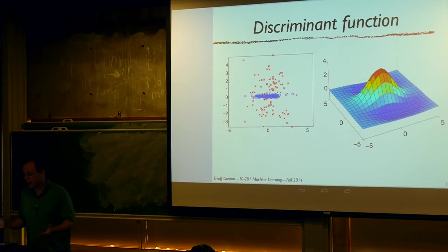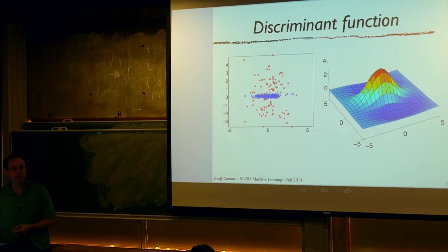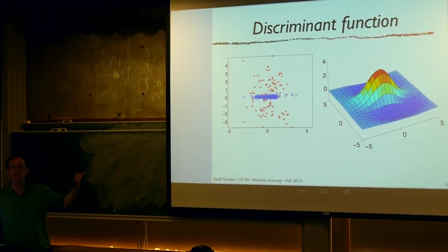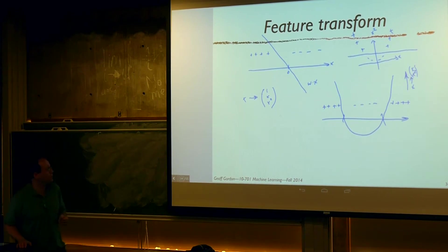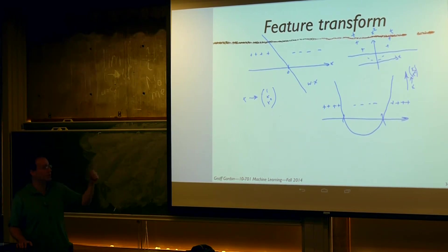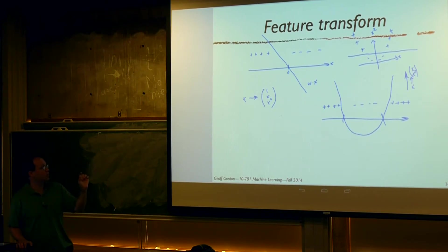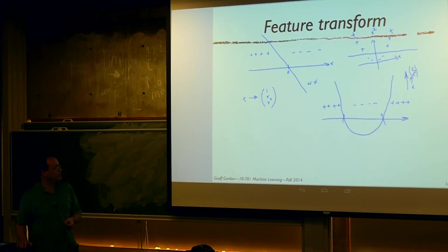We talked about how you might want to learn a nonlinear boundary — quadratic discriminants, Chebyshev polynomial discriminants, or Gaussian radial basis functions. We also talked about feature transforms: the top-left picture shows the linear discriminant, and if you do a feature transform adding horizontal position squared as a feature, things that are linear in the transformed space wind up being nonlinear decision boundaries in the original space. This lets you learn much more complicated decision boundaries.